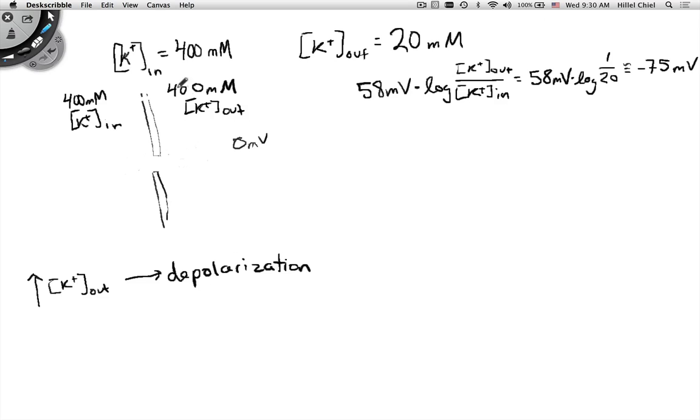That tells us that as we increase the potassium in general, that fraction will get closer and closer to 1 as the value outside gets larger and larger. So what will happen is you'll get closer and closer to 0. And in fact, if you made it large enough, you could reverse it and now it would be positive.